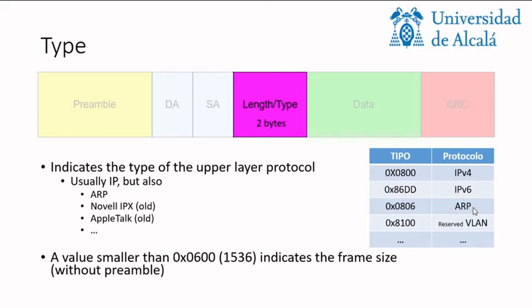ARP is used somehow at a level in between layer 2 and layer 3 because it checks the hardware address for the routing address, for the IP address. Then we also have some very old types like these ones that you have here that are not so used anymore. Finally you have also some reserved values like this one for VLAN that you will see in the following weeks.